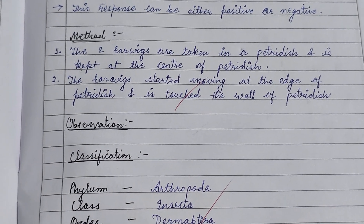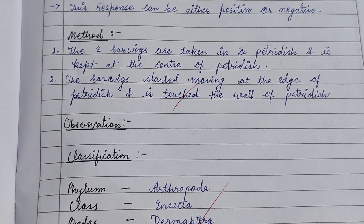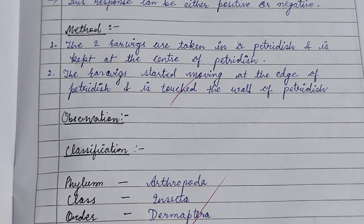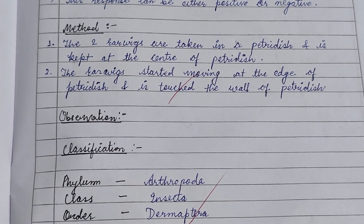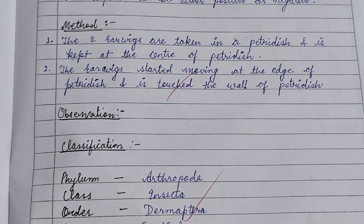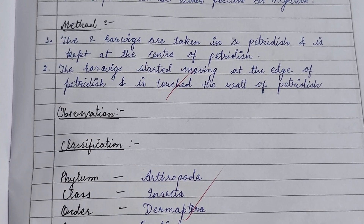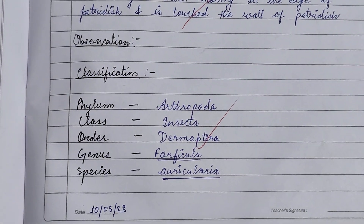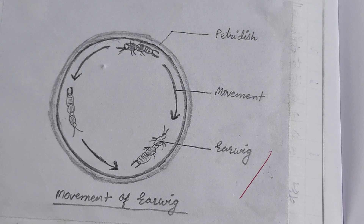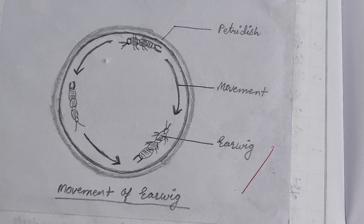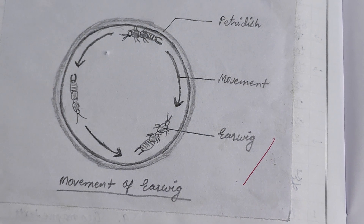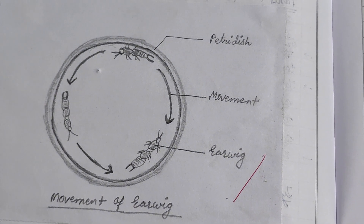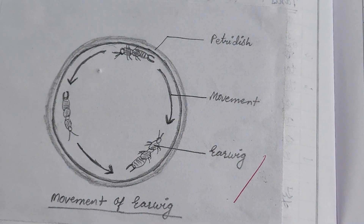For the method, two earwigs are taken in a petri dish and kept at the center of the petri dish. The earwigs start moving towards the edge of the petri dish and touch the wall of the petri dish. Here is a picture showing the earwig moved to the edge of the petri dish.